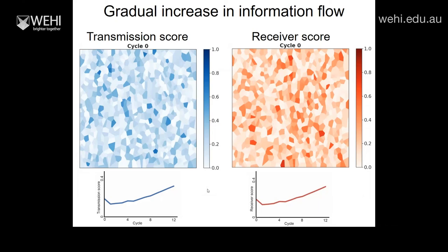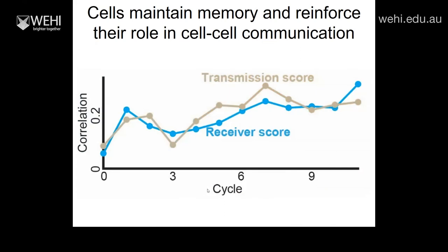The question remains: is this a single-cell property, or does every cell take a different role in each cycle? We looked at transmission and receiver scores over consecutive cycles and found a positive correlation — cells remembered their role in the communication network from the previous cycle and maintained, even reinforced it. We see a growing correlation over time, meaning there is a memory that is reinforced — cells take different roles in the communication network and those roles are reinforced over time.